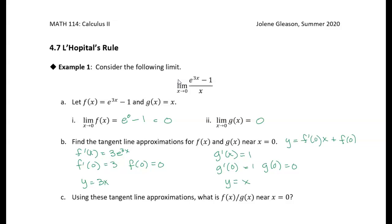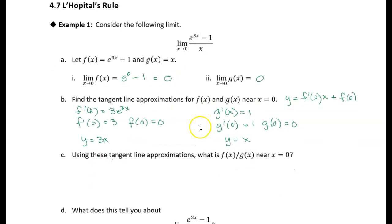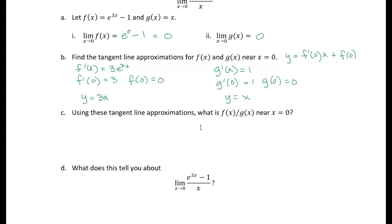So we have our two tangent lines. Now let's take a look at what the ratio of those tangent line approximations give us. So if we look at f of x over g of x and we approximate the ratio of those functions by their tangent lines, we end up with 3x over x. The x's cancel, so that's just 3.